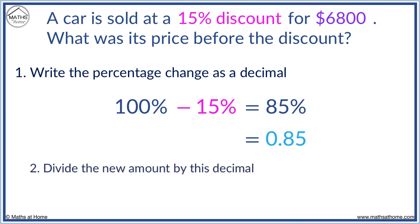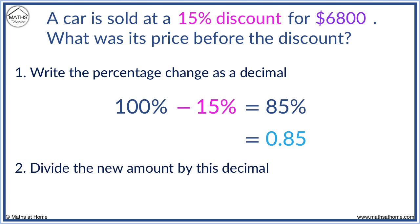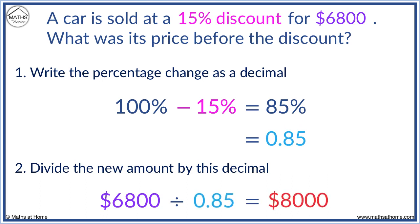Now we just divide the new amount by this decimal. The new value for the car is $6,800 and we divide this by 0.85 to get $8,000. Before it was discounted to $6,800, the car was $8,000.